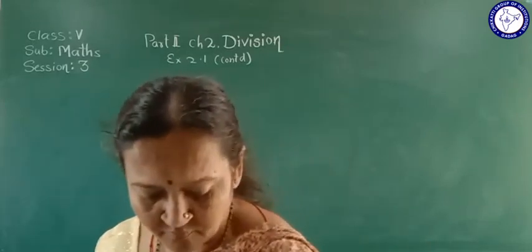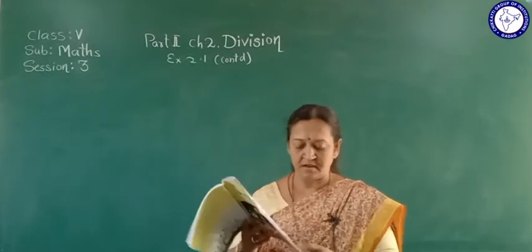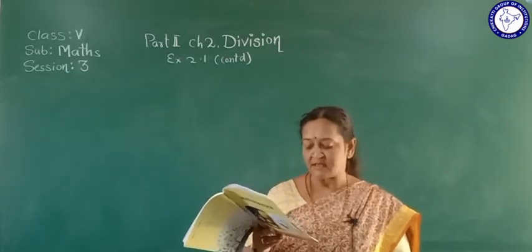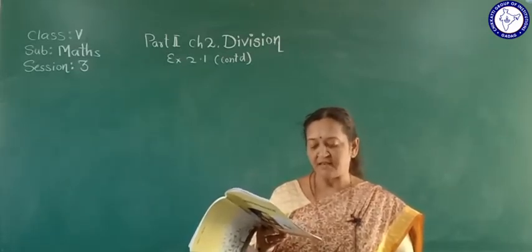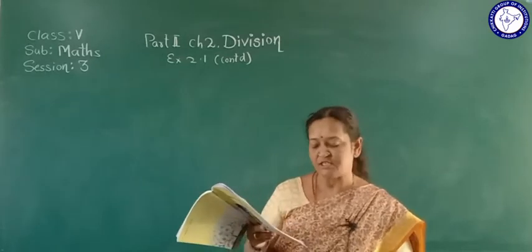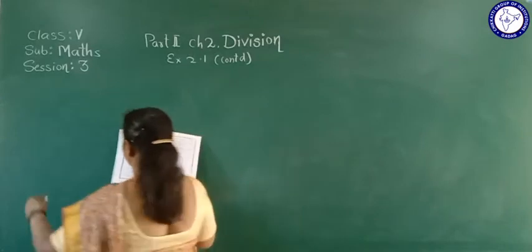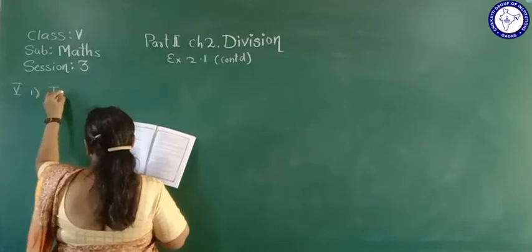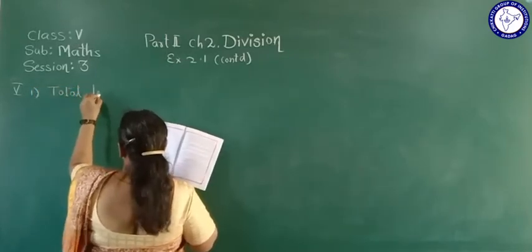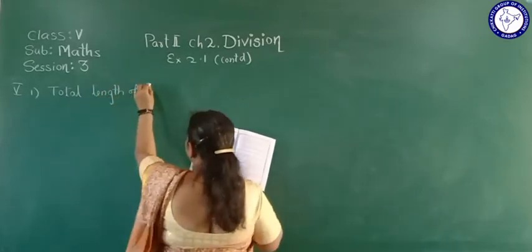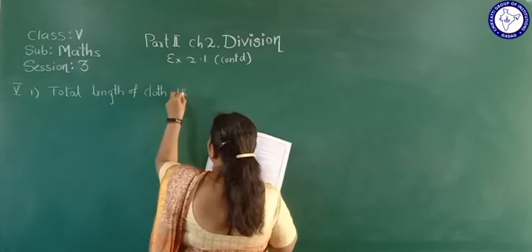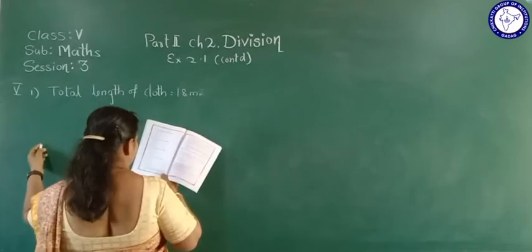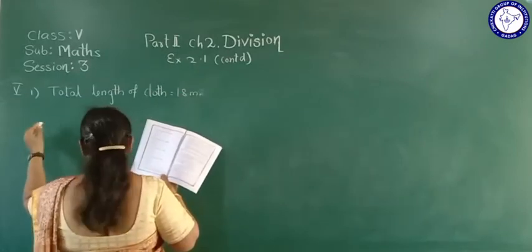5th main, 1st one — a tailor had 18 meters of cloth. He can stitch 9 shirts from this cloth. Find the length of cloth required to stitch 1 shirt. Total length of cloth is 18 meters. Number of shirts that can be prepared are 9 shirts.